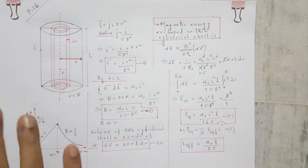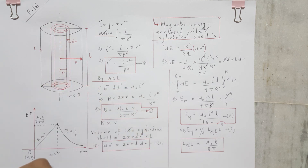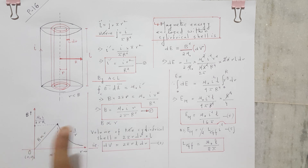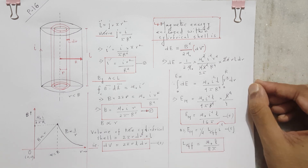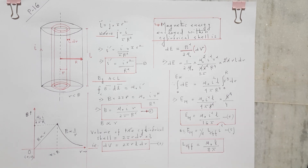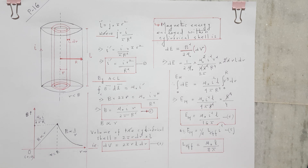Here dE is the magnetic energy enclosed by the cylindrical shell, and B²/(2μ₀) is the magnetic energy density — magnetic energy per unit volume. This is an important approach: find the magnetic field, use it to find the magnetic energy enclosed within the system, then compare with the standard formula ½LI² to get the self-inductance. I hope this problem has cleared some fundamental concepts of self-inductance. Thank you all — I will come back with another interesting problem to help clarify concepts at the plus-two level.